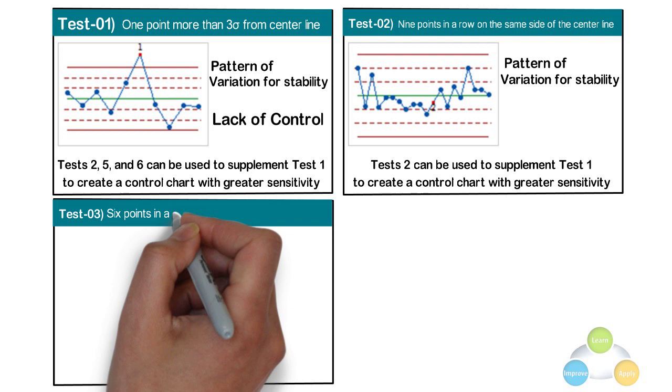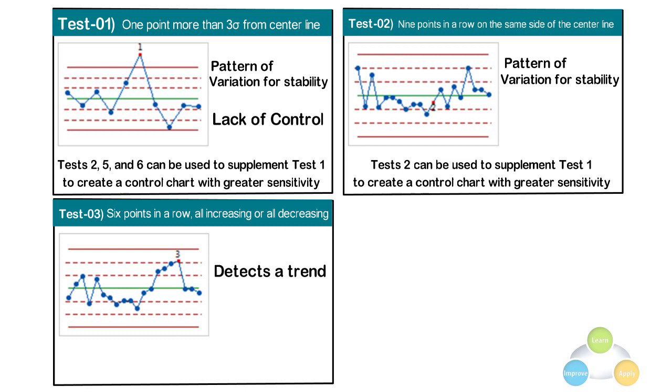Test 3: 6 points in a row, all increasing or all decreasing. Test 3 detects a trend or continuous movement up or down. This test looks for a long series of consecutive points without a change in direction.